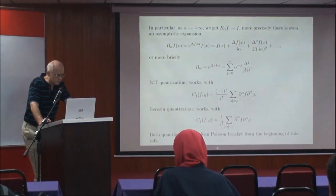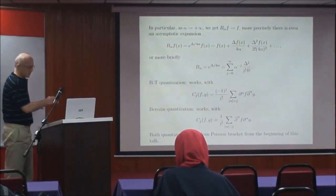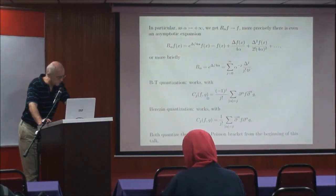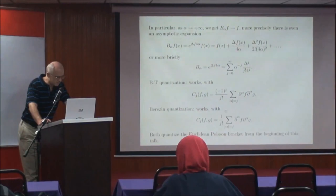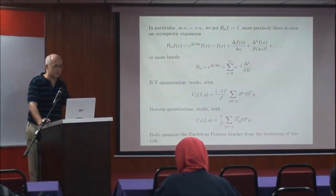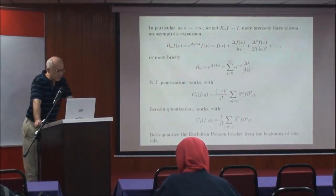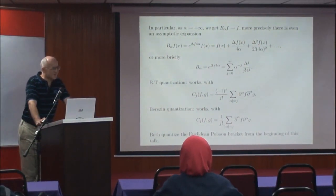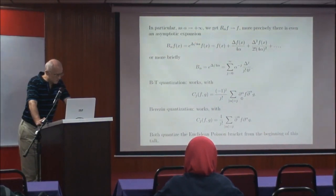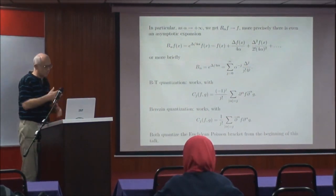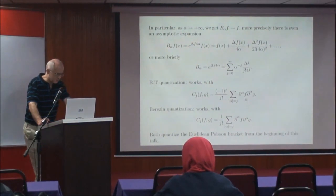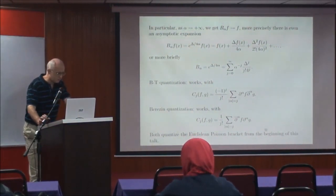From this, as we saw two slides ago, we have the Berezin quantization with these coefficients C_j. We also have Berezin-Toeplitz quantization, which looks the same except there is a factor of minus 1 to the j, and the holomorphic and anti-holomorphic derivatives are in two shapes. So we have two different quantizations — in the terminology that Professor Schlichenmaier introduced in yesterday's physics department lecture, this one would be the product with separation of variables, and this is also separation of variables but with holomorphic and anti-holomorphic roles interchanged. This one is called anti-Wick, and the other the Wick separation of variables, sometimes in the literature.